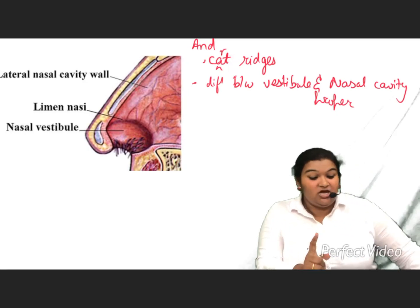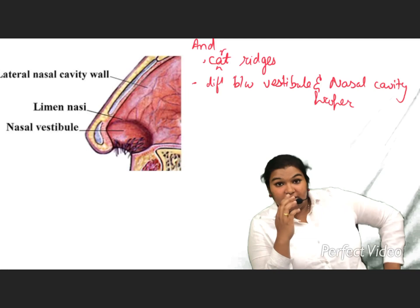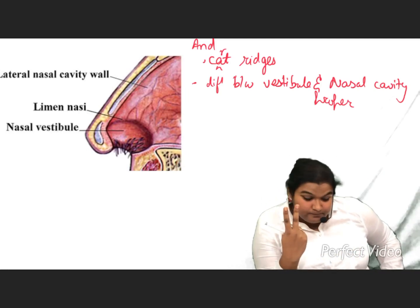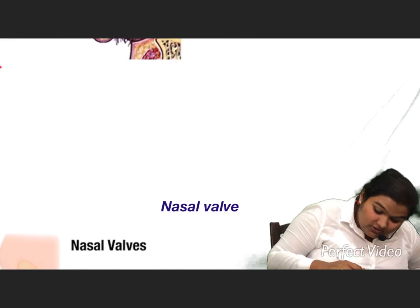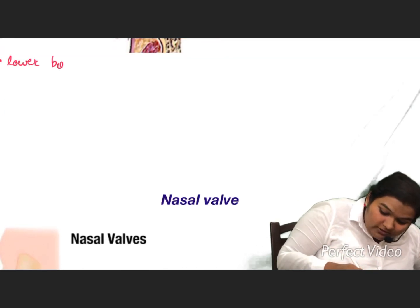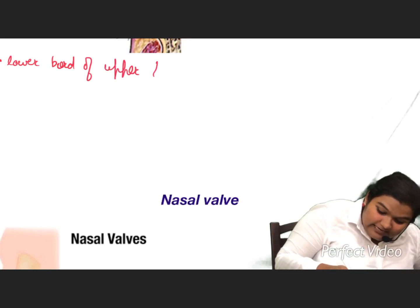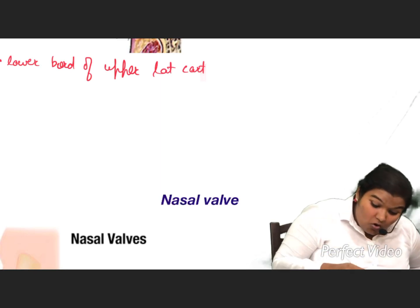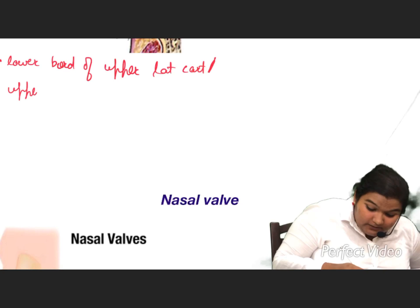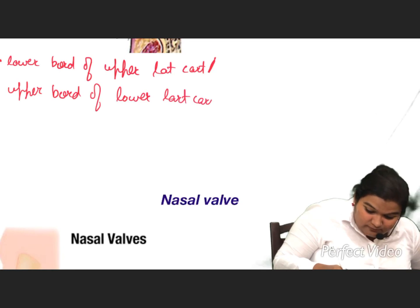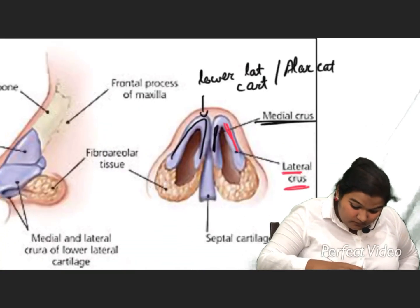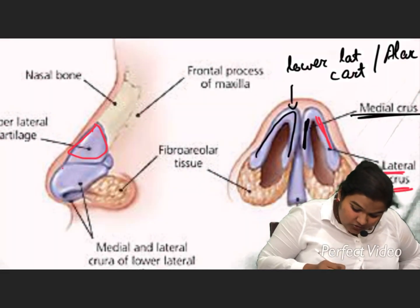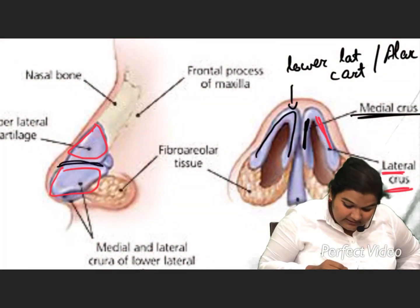So what is the limen nasi? It is a cartilaginous ridge which differentiates between the vestibule and the nasal cavity proper. It is formed by the lower border of the upper lateral cartilage. In this image, we can see the upper lateral cartilage, the lower lateral cartilage, and the limen nasi.